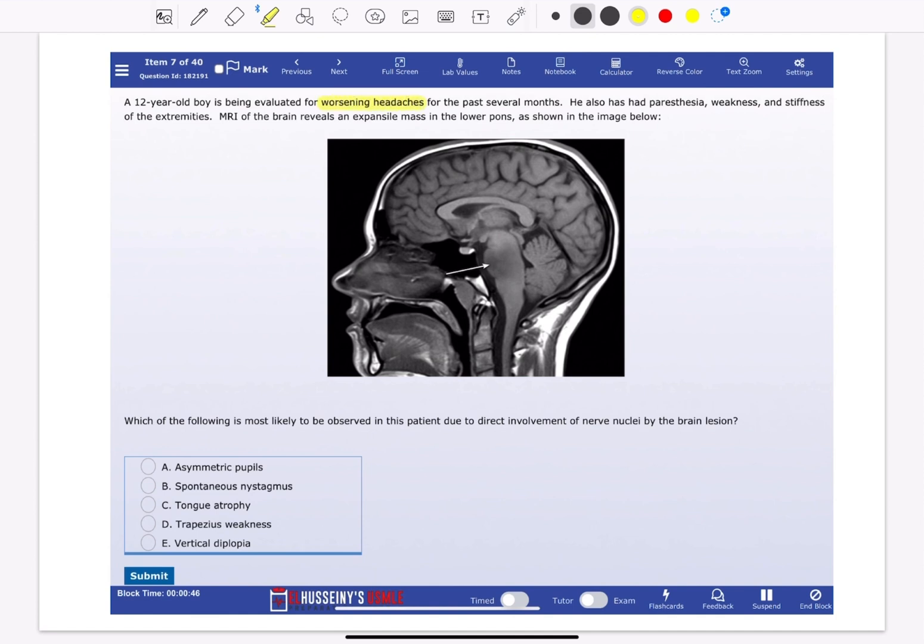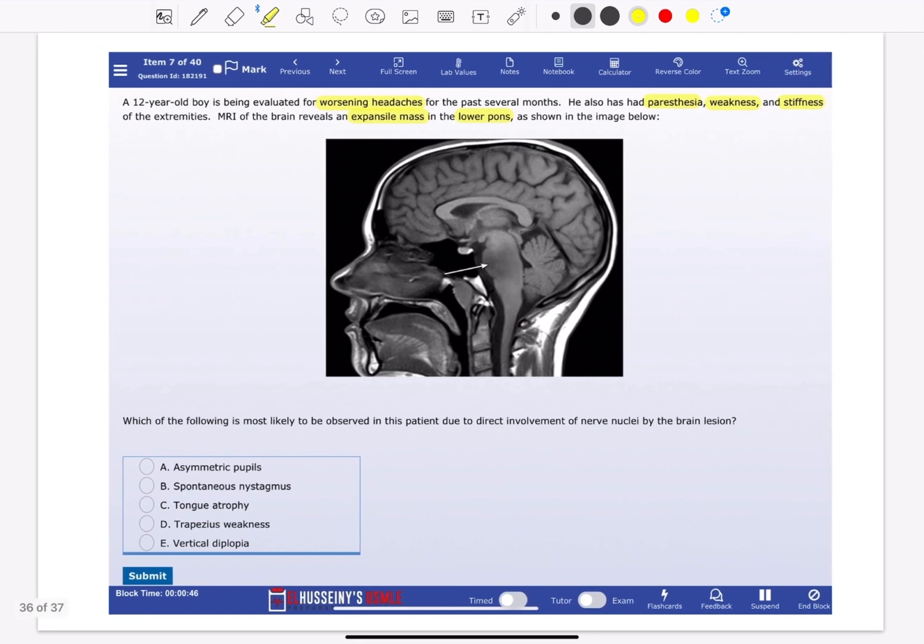He also had paresthesia, weakness, and stiffness of the extremities. MRI of the brain reveals an expansive mass in the lower pons, as shown in the image below. Which of the following is most likely to be observed in this patient due to direct involvement of nerve nuclei by the lesion?